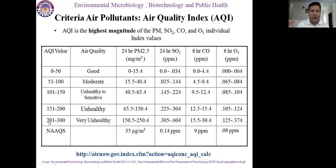When the AQI is from 201 to 300, it is very unhealthy: particulate matter concentrations range from 150 to 250 micrograms per meter cube, and the other three indicators — sulfur dioxide, carbon monoxide, and ozone — are at their corresponding concentrations. NAAQS states that 35 micrograms per meter cube of particulate matter is acceptable, sulfur dioxide should be 0.14 ppm for 24 hours, carbon monoxide should be 9 ppm for 8 hours, and ozone concentration 0.08 ppm for 8 hours — all acceptable.